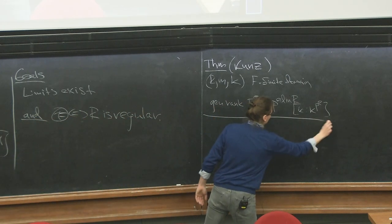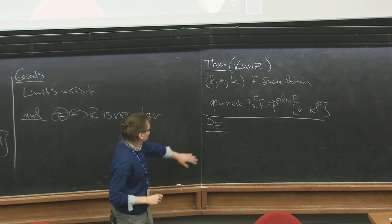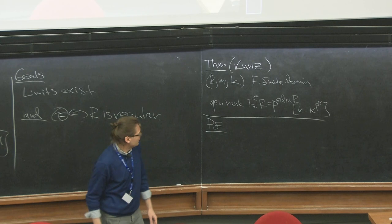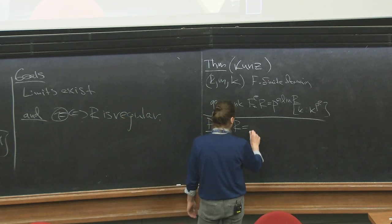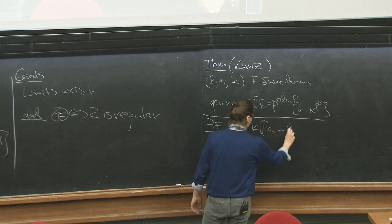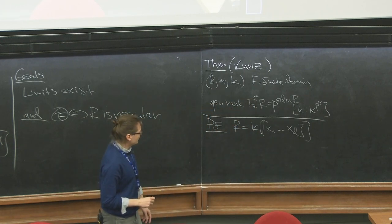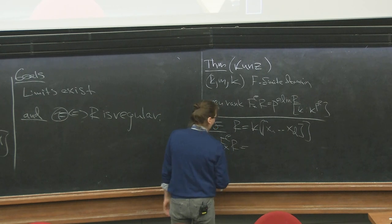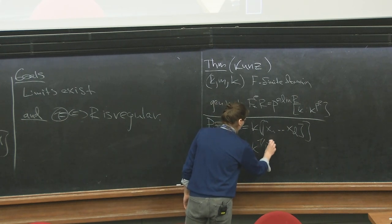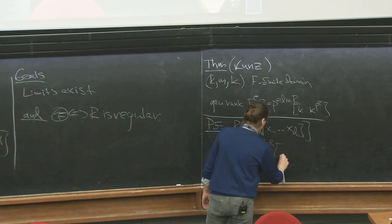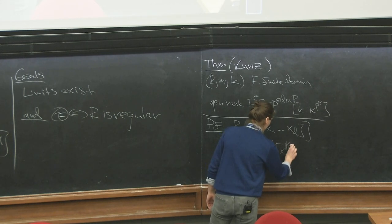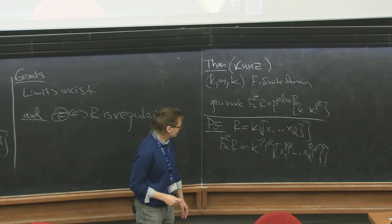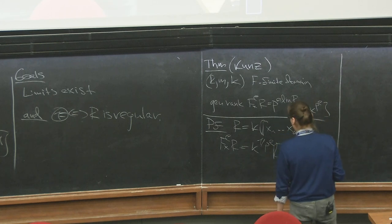Let's prove that, starting with the simplest possible case: take our ring R to be a power series ring over something. In this case I can understand Frobenius very visually — I take p-th roots of my scalars and then p-th roots of my variables, x_1^{1/p}, ..., x_d^{1/p}.